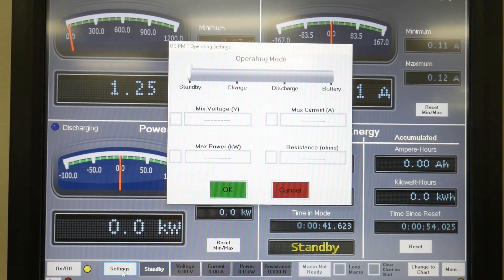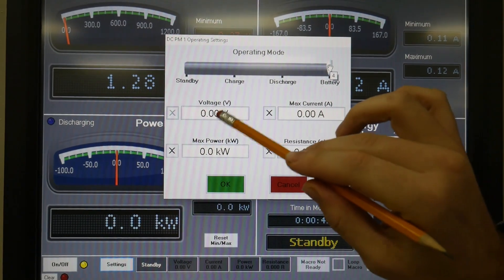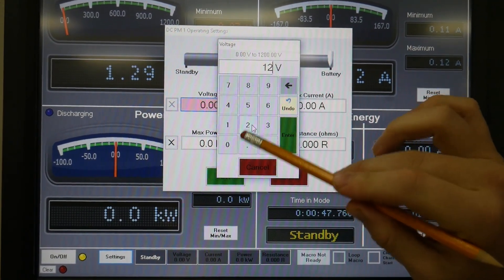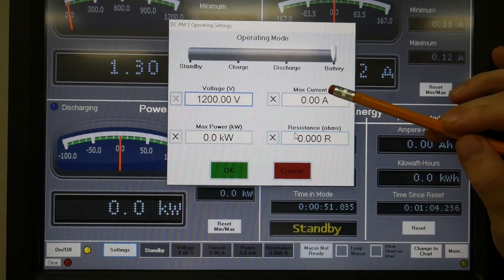To get to the battery emulator mode you would hit settings, battery, and you can adjust the voltage and the other settings as needed.